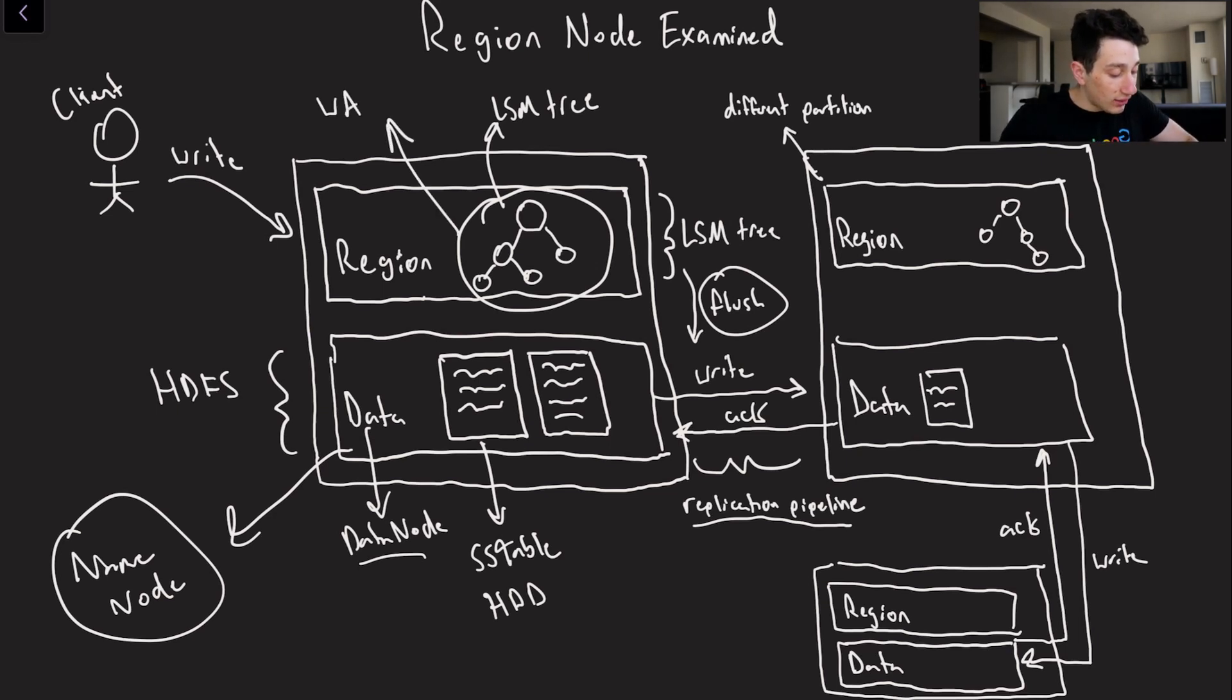Of course we also have something like a write ahead log on our region node to make sure that our LSM tree doesn't get lost if the region node were to crash or something like that.